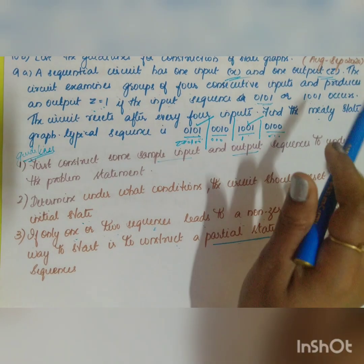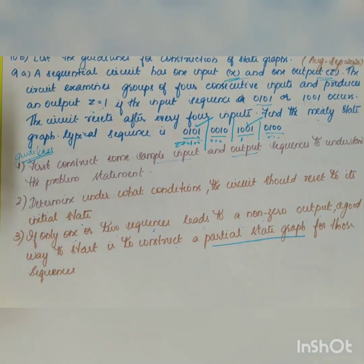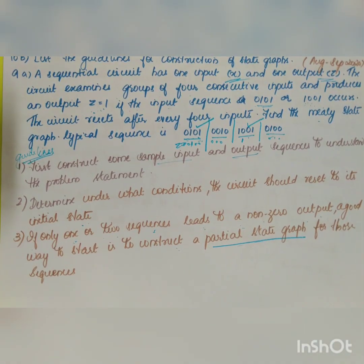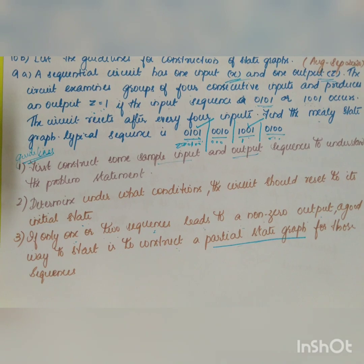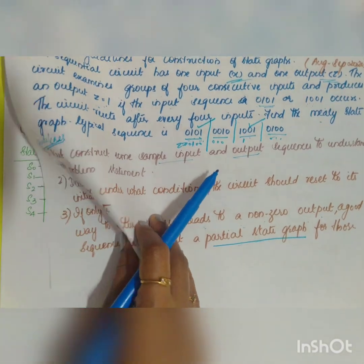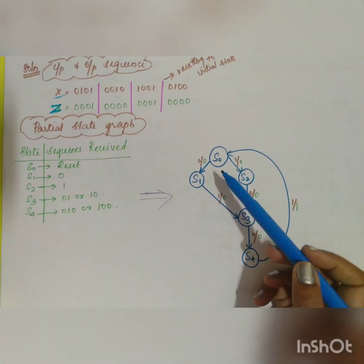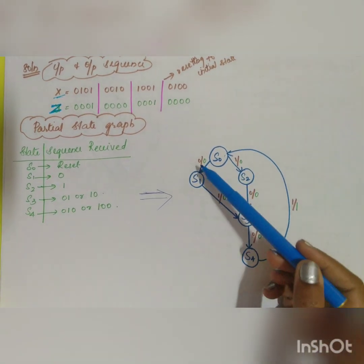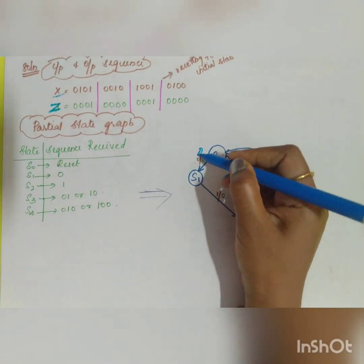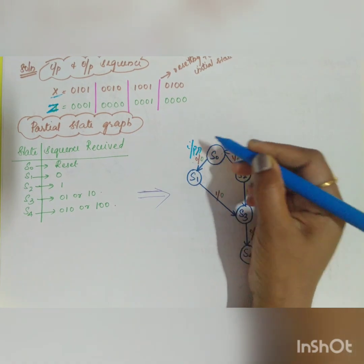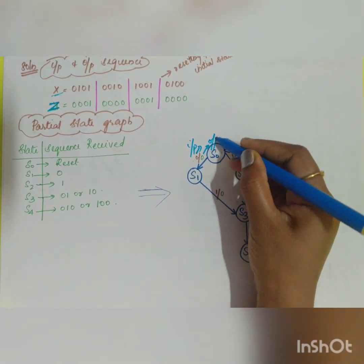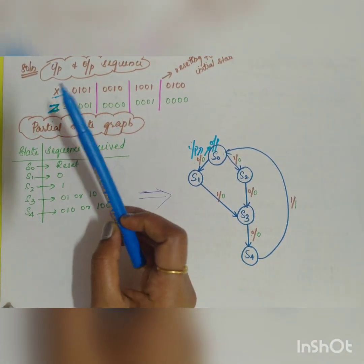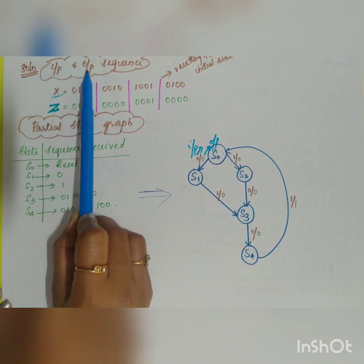A Mealy circuit is a sequential circuit in which the output depends both on the present state of the flip-flop and the input. The circuit is represented by states S0, S1, S2, etc., with input and output values given by a slash — input value slash output value. Let us proceed to the first step.